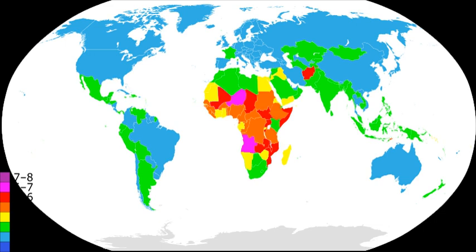Some Japanese localities, facing significant population loss, are offering economic incentives. Yamatsuri, a town of 7,000 just north of Tokyo, offers parents $4,600 for the birth of a child and $460 a year for 10 years.